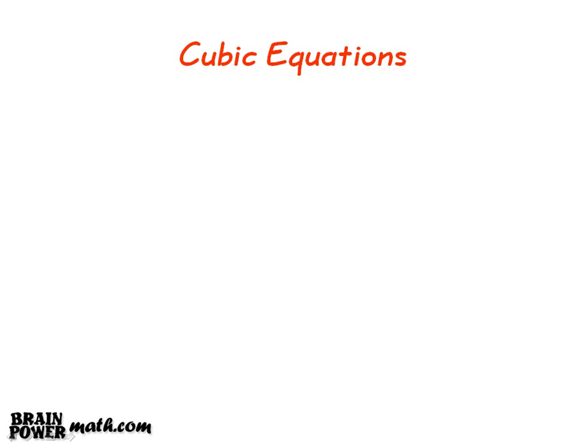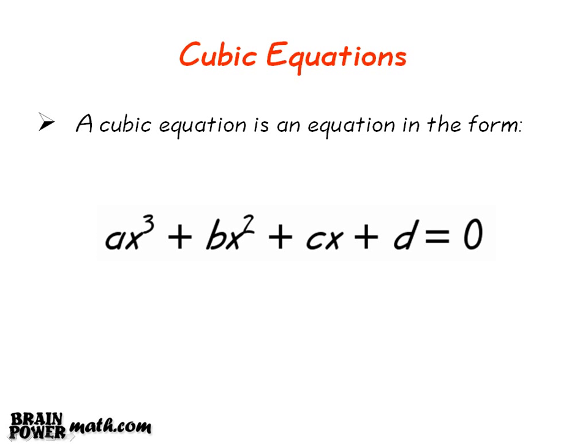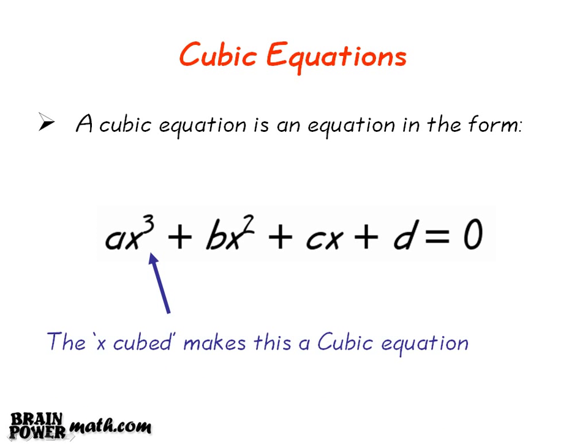We will now look at the area of cubic equations. A cubic equation is an equation in the form ax cubed plus bx squared plus cx plus d is equal to 0. An equation with a cubed power is called a cubic equation.